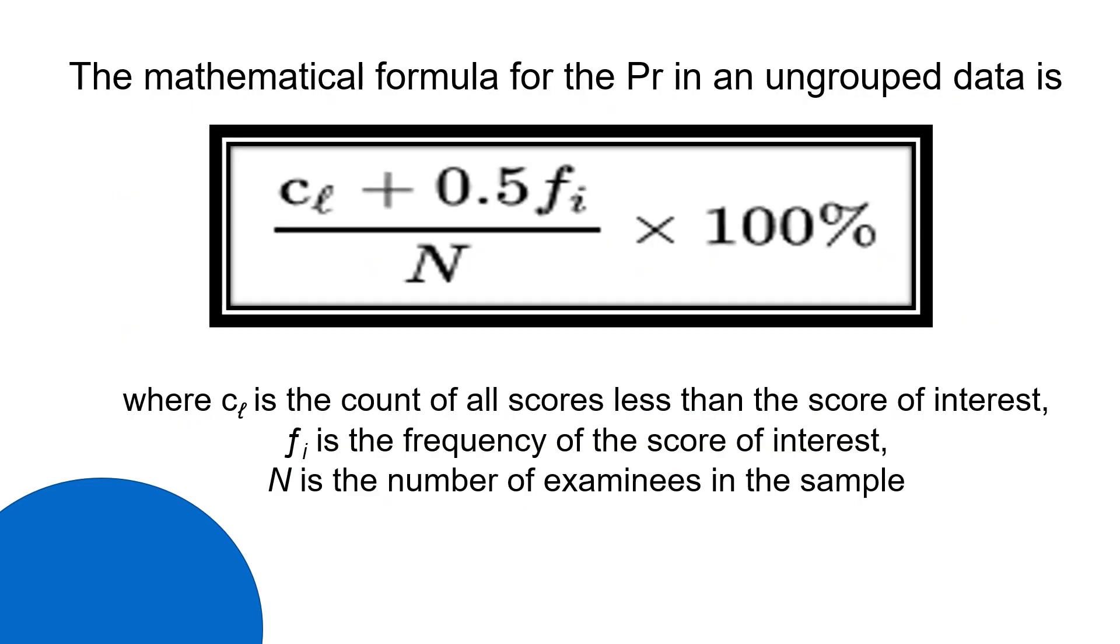The mathematical formula for the percentile rank in ungrouped data is C_L, or the number of scores that are less than the score of interest, plus 0.5 times the frequency of interest, divided by N, the number of examinees, times 100%.